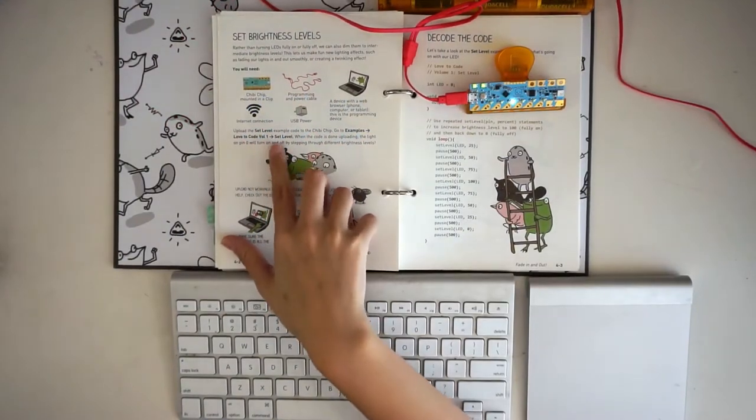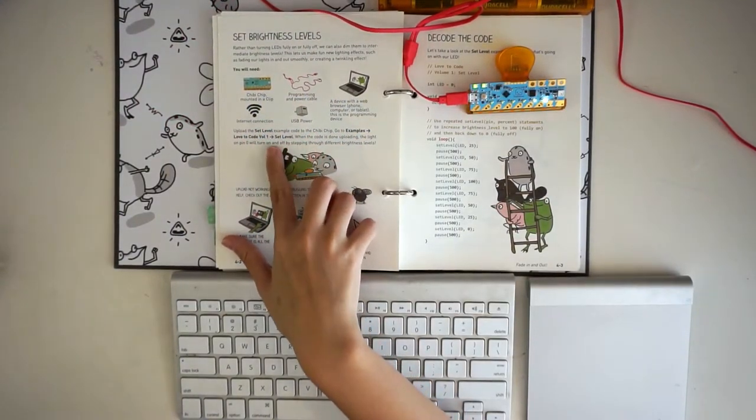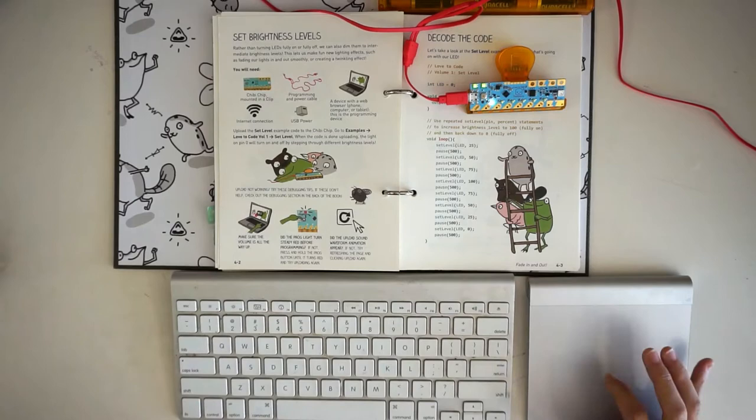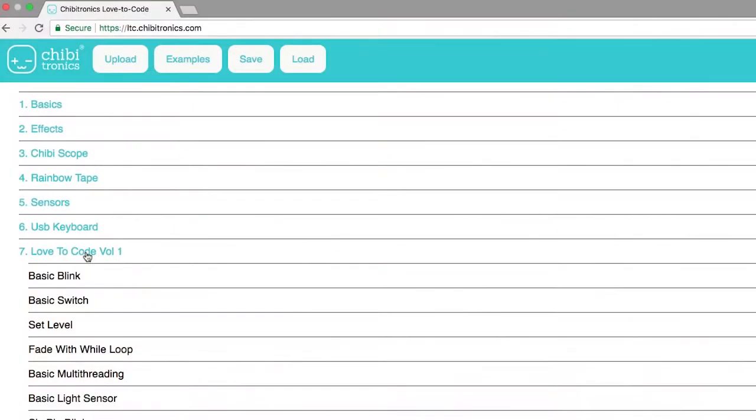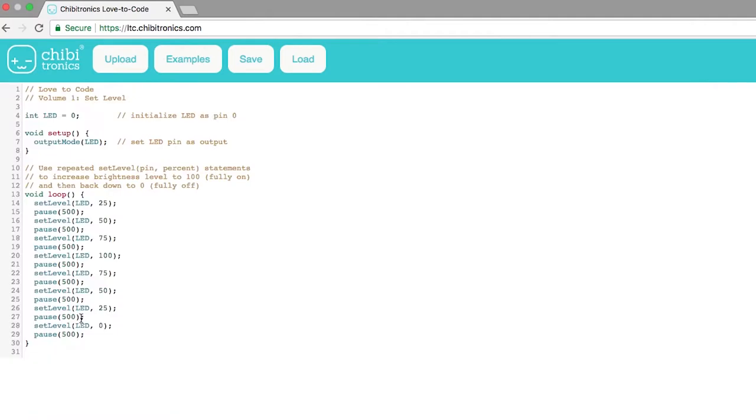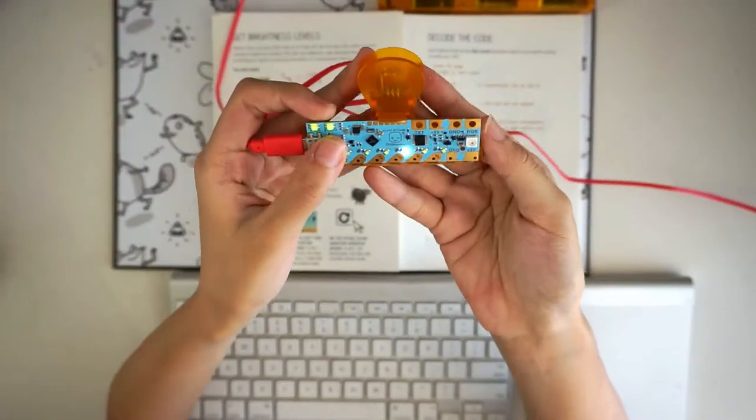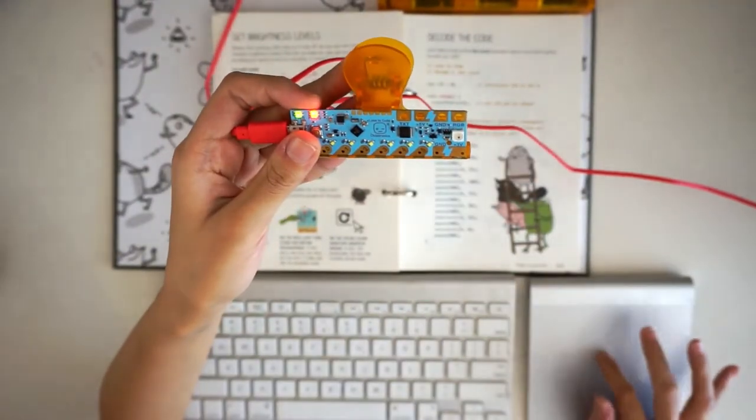In the first exercise, we learn how to set the brightness of an LED to values that are not just on or off. Let's preview the set level example code. Don't forget to press and hold the Progue button until the light turns red before clicking Upload.